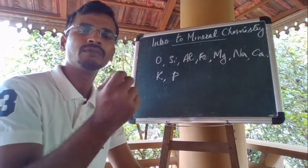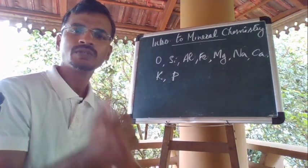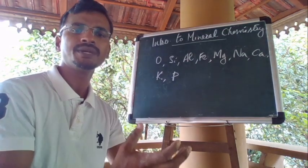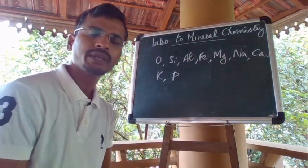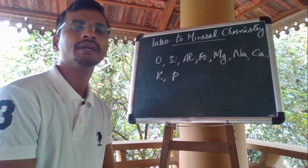The majority of the earth is composed of a few elements: oxygen, silicon, aluminum, iron, calcium, potassium, sodium and magnesium — these constitute about 90% of the earth. In terms of minerals, 39% of the earth's crust is made up of plagioclase feldspar, which is sodium and calcium aluminum silicate. Then there is alkali feldspar, quartz, pyroxenes, amphiboles, mica, clay and other silicates.